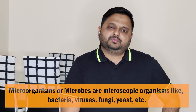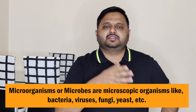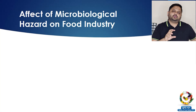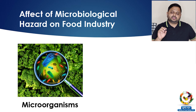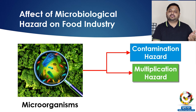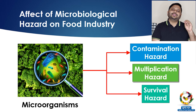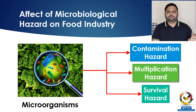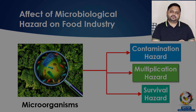Microorganisms are not visible to our eyes — they include bacteria, viruses, and fungi. They are one of the biggest problems for the food industry because we cannot see them, making them very challenging to control. Microorganisms can cause contamination, multiplication, and survival. They are the only living hazard; physical, chemical, and allergenic hazards are all dead materials. Because microorganisms are alive, they can multiply and survive, making them one of the biggest hazards in the food industry.